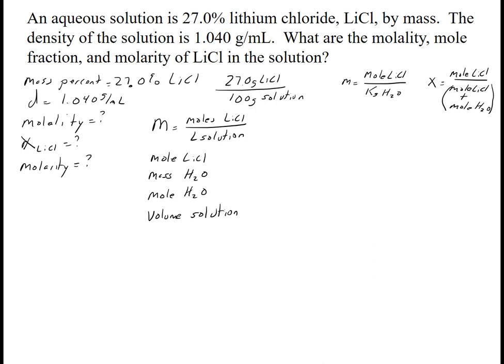Just because I wrote them down in this order doesn't mean I necessarily have to do them in this order, although for this one I can. To find the moles of lithium chloride I need the molar mass. The molar mass of lithium chloride is 42.38 grams per mole. I'll also need the molar mass of water, which is 18.02 grams per mole.